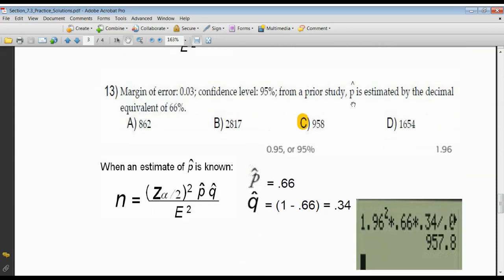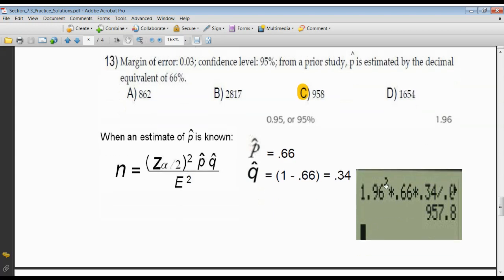Now, we do know P hat is given to us. Looking for a 95% confidence level. The Z score is 1.96. And I'm told to square that. P hat is given to me as 66%. That changed to a decimal is 0.66. Q hat is 1 minus that, 0.34. So, there it is. In place of P hat, I'm substituting 0.66. In place of Q hat, I'm substituting 0.34 divided by the error squared. The error here is 0.03. You can't see it off to the end here. 0.03 squared. And rounding 957.8 to the next highest number is 958.